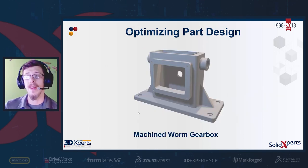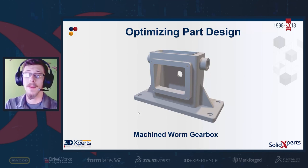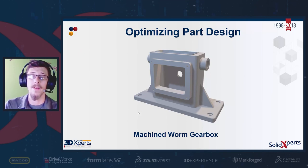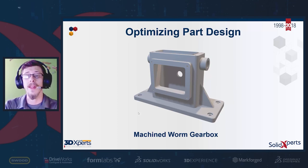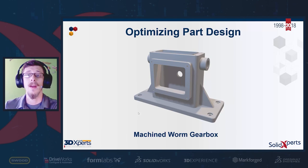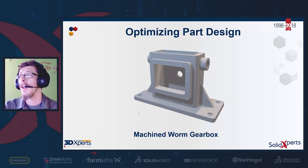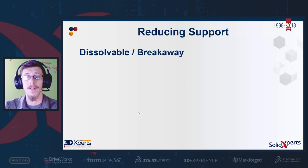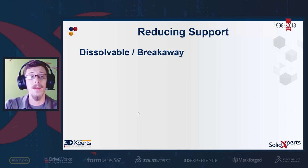For discussion purposes today, we're going to optimize the part design. This is a machined worm gearbox from one of our online training sessions, the SolidWorks Essentials course. The part has been slightly modified to cater towards additive manufacturing. Once we know the support overhang angle and nozzle size, we can discuss how to use support effectively.